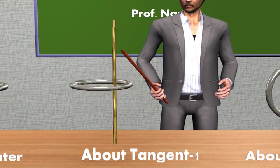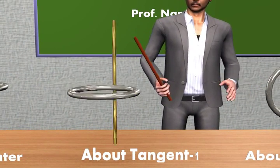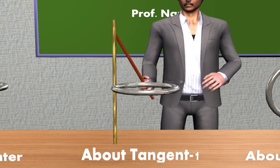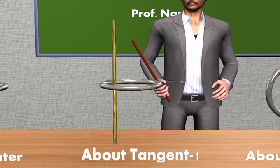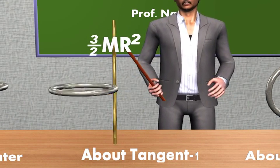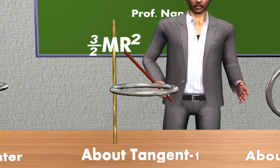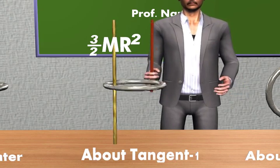Case 2: this is the rotation of a ring about a tangent perpendicular to its plane. Its Moment of Inertia is given by 3/2 mR square.